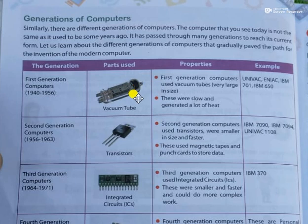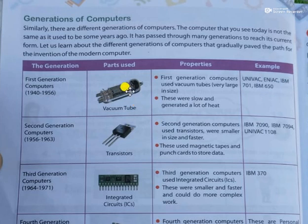Those computers were very bulky in size, used vacuum tubes, and there was a large expense to maintain them. Examples of those first generation computers are UNIVAC, ENIAC, and IBM 701. Because these vacuum tubes were creating problems — bursting out during processing — scientists started working out a solution.